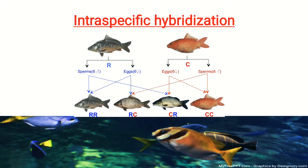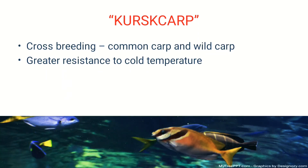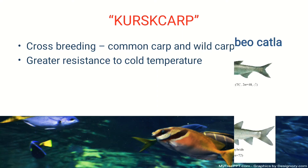The main thing to learn here is the example of intraspecific hybridization. Some of you made a mistake yesterday — Kurskarp was the example. We should remember that Kurskarp is a cross between common carp and wild carp. The need for hybridization is to get better results: better growth, better resistance to diseases, better quality, early or late maturity as needed, and better fecundity. Kurskarp has greater resistance to cold temperature.